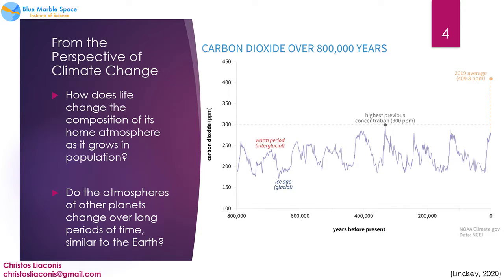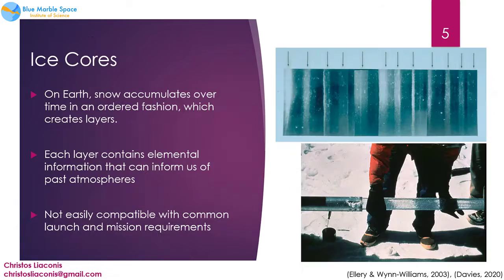Here on Earth, we can go back in time to study our atmosphere by examining ice cores. Analyzing these cores is the most common and trusted method for examining the Earth's older atmosphere. Cores consist of layers of snow and ice that build over time while still containing past concentrations of greenhouse gases. However, the drills used for extraction cannot be easily applied on other planets, as they have high power requirements and utilize hydraulic fuels.